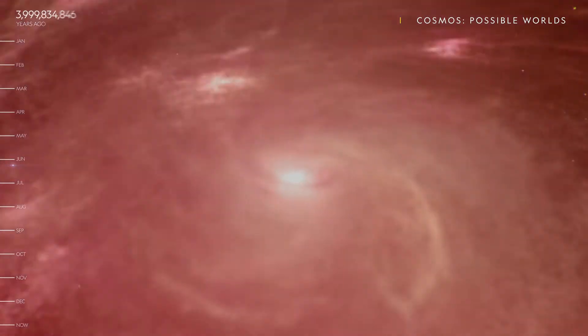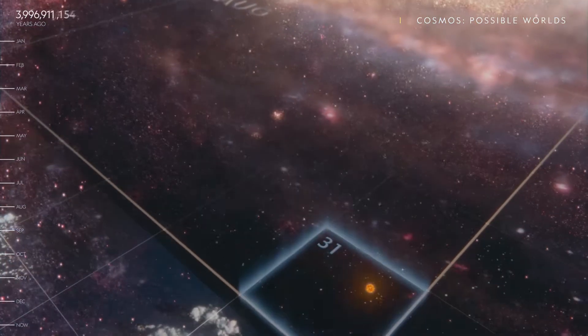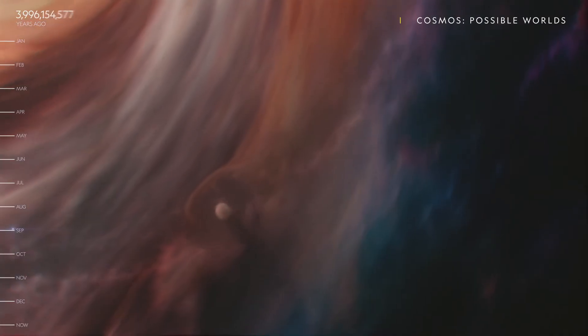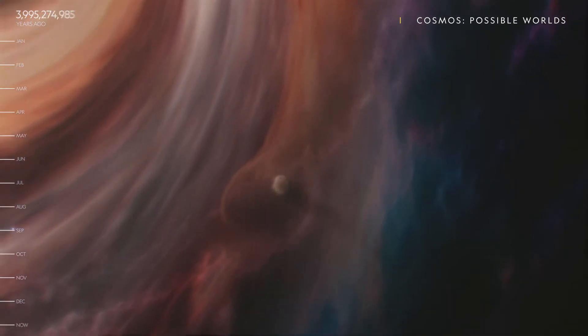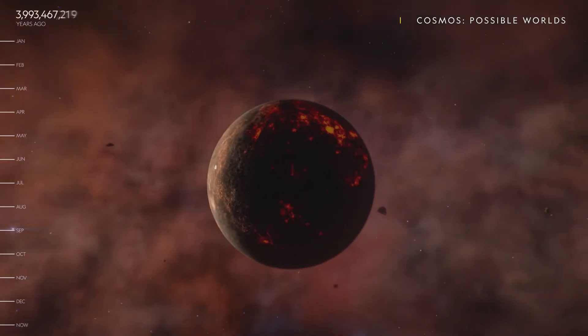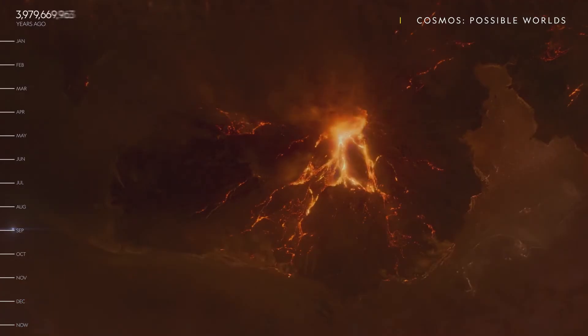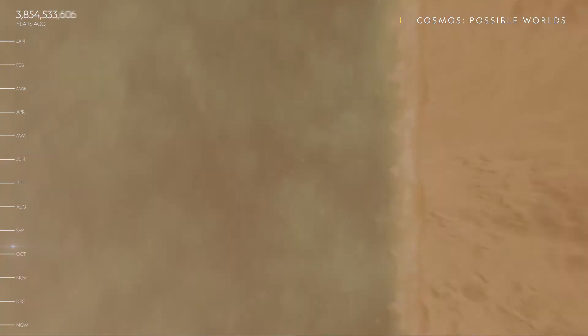Six billion years after that, our star the Sun was born. It was August 31st on the cosmic calendar. Jupiter and the other planets, including our own, would soon follow. The atmosphere on Earth was a toxic environment for our kind of life. Then September 21st on the cosmic calendar.